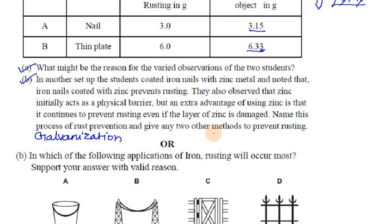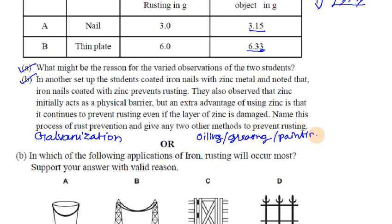Give two other methods to prevent rusting. Two methods are: oiling, greasing, painting, and alloying.